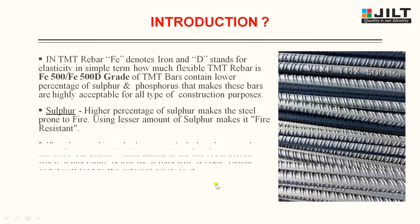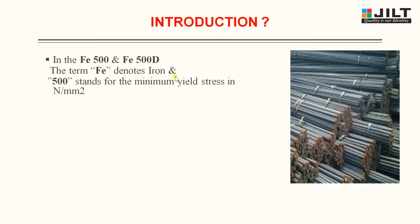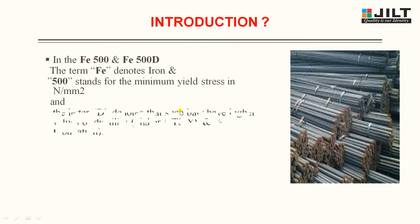Now moving to another description: in FE500 and FE500D, FE denotes iron and 500 indicates the minimum yield stress in terms of Newton per mm square. So it is very clear — FE is nothing but iron, and 500 indicates the minimum yield stress in Newton per mm square.